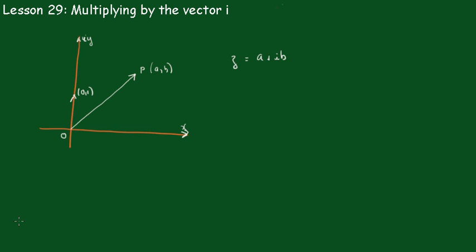Lesson 29: multiplying by the vector i. You can see this is the vector i here, up here. And we're going to multiply these two vectors together and see what happens.